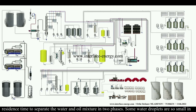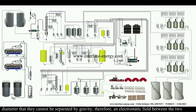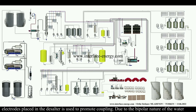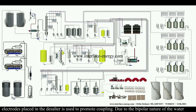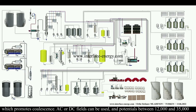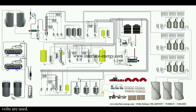Some water droplets are so small in diameter that they cannot be separated by gravity. Therefore, an electrostatic field between two electrodes placed in the desalter is used to promote coupling. Due to the bipolar nature of the water molecule, this electric field promotes attraction with neighboring water droplets, which promotes coalescence. AC or DC fields can be used, with potentials between 12,000 and 35,000 volts.